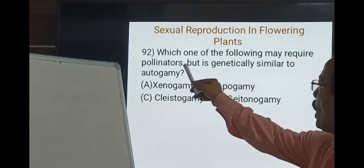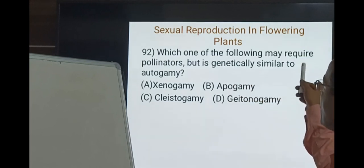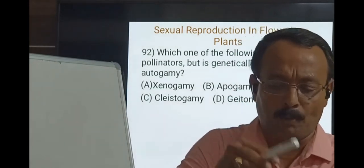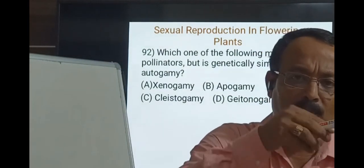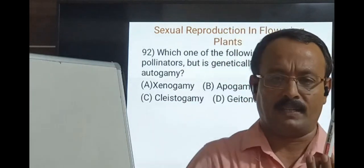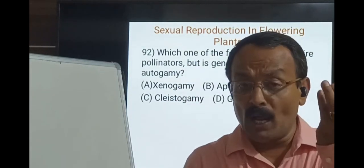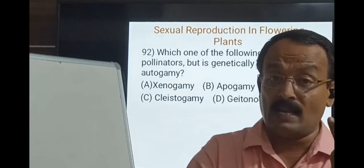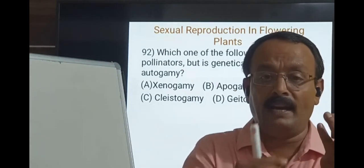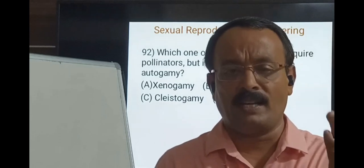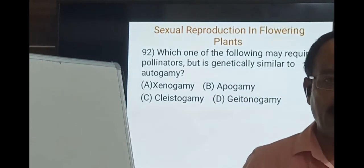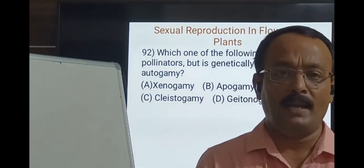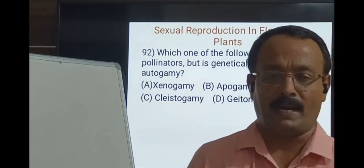Question 92: Which one may require pollinators but is genetically similar to autogamy? In autogamy, pollen from the anther of a flower lands on the stigma of the same flower. In geitonogamy, pollen produced in one flower lands on the stigma of another flower borne on the same plant — it always needs the aid of a pollinator, but does not bring about genetic variability because both flowers are on the same plant. So geitonogamy is genetically similar to autogamy.